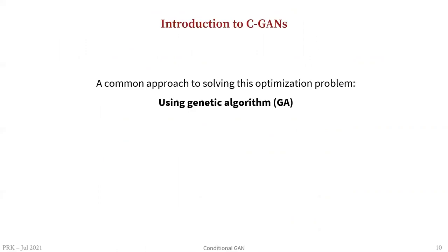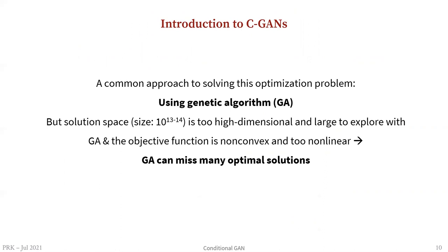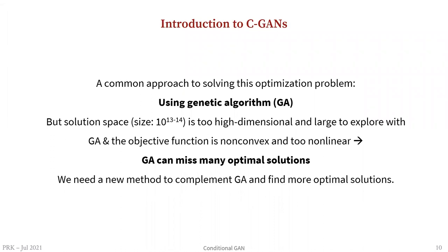The usual approach to solving this highly complex optimization problem is using a genetic algorithm or some other black-box optimization approach. However, the solution space is too high-dimensional and hard to explore. The objective function is also non-convex and highly non-linear, so the GA can miss many optimal solutions. We can use a generative model to find more optimal solutions and complement the performance of the GA.